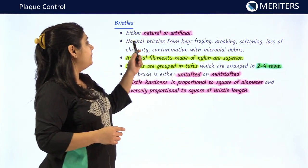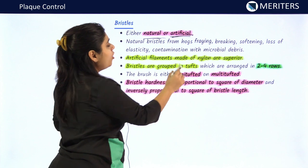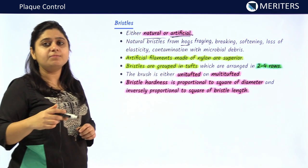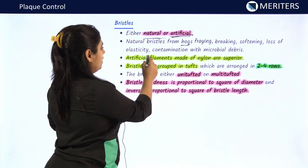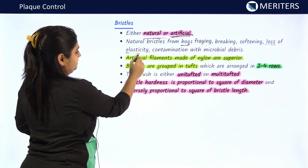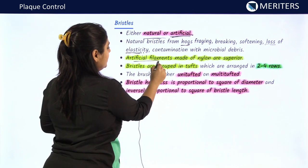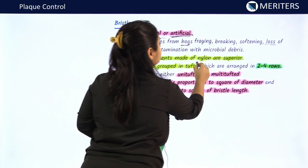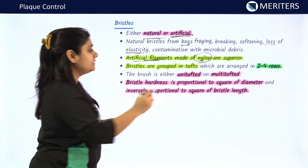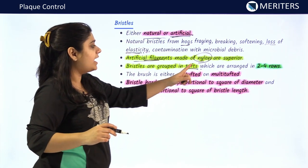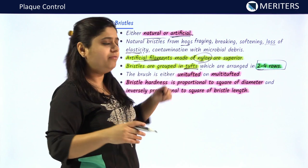The brush head may be long or short; short-head toothbrushes are preferable because they can reach the most posterior part and lingual sides of the mouth easily. Bristles may be made of natural or artificial materials. Natural bristles are made from hog's hair and have disadvantages: they fray easily, break easily, are softer, contaminate easily, and are less elastic. To combat these disadvantages, artificial nylon filament bristles were developed, which are superior to natural bristles.